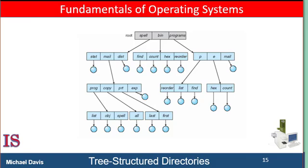The initial current directory of a user's login shell is designated when the user job starts or when the user logs in. The operating system searches the accounting file or some other predefined location to find an entry for this user. If the accounting file contains a pointer to, or the name of, the user's initial directory, the pointer is copied to the local variable specifying the user's initial current directory. From that shell, other processes can be spawned. The current directory of any sub-process is usually the current directory of the parent when it is spawned.